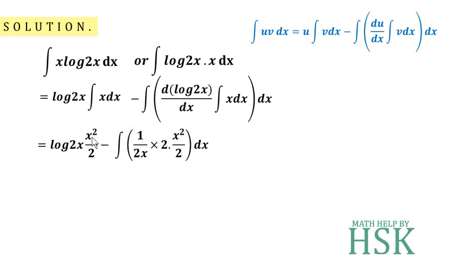So I get: log(2x) into x²/2, minus d/dx of log(2x). The differentiation of log(x) is 1/x, so applying the chain rule I get 1/(2x), and d/dx of 2x is 2, giving 1/x overall. This is then multiplied by x²/2, which is the integration of x.